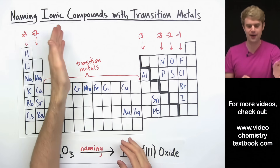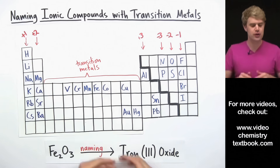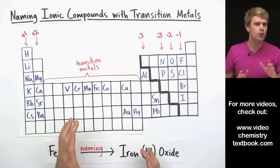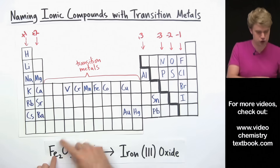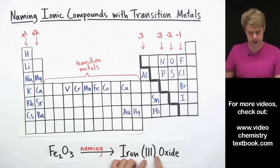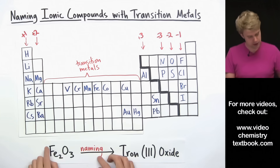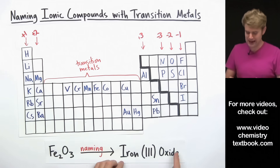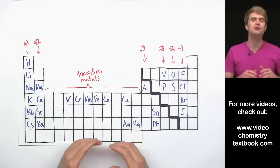This is an introduction to naming ionic compounds with transition metals. When we write the name for an ionic compound that contains transition metals, those names usually have Roman numerals in the middle of them. In this video, we'll learn how to take the formula for a compound that contains a transition metal and write the name for it with Roman numerals.